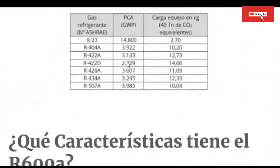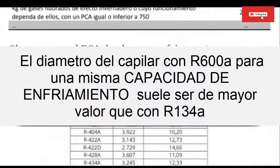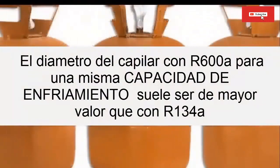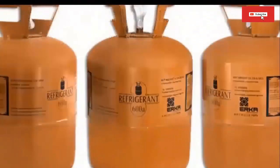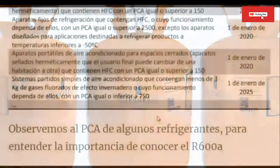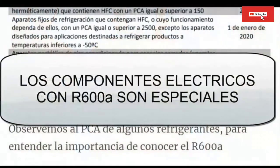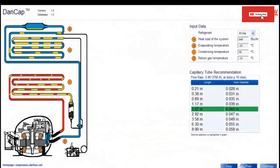Difference 7: In case of using a RSI X-100A compressor with RON 134A and the characteristics of the capillary are not changed, the compressor will be forced, since too much refrigerant will enter its suction, increasing electrical consumption. Difference 8: The electrical components with RSI X-100A are different for contact spark precautions. Now to check the capillaries used by both compressors, we are going to use the following program.